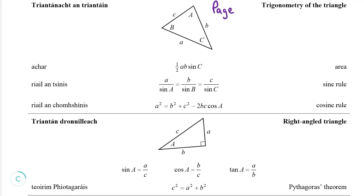The cosine rule formula is: a² = b² + c² − 2bc cos A. Here, small a is the side opposite the angle A we want to find, and small b and c are the other two sides in any order. We can't use the sine rule here because that requires at least one known angle, and we have none — only three sides.